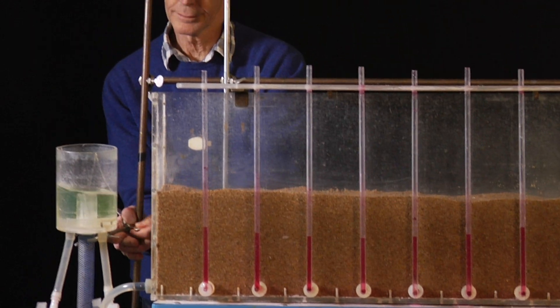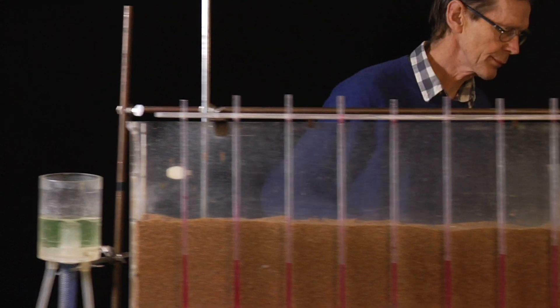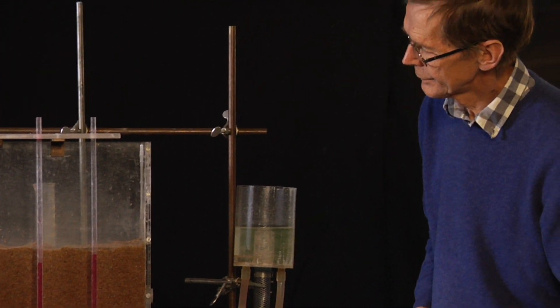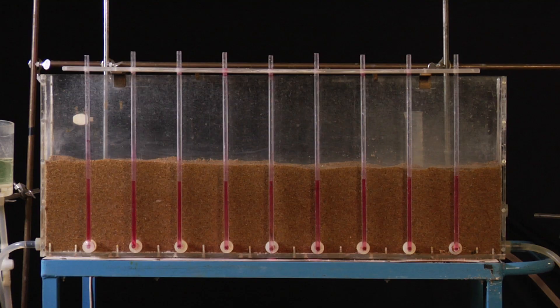By analyzing how the groundwater table in different directions is affected by the pumping, a skilled hydrogeologist can provide information on the geological boundaries of the aquifer, for instance if there is an impermeable boundary or direct contact with a lake.